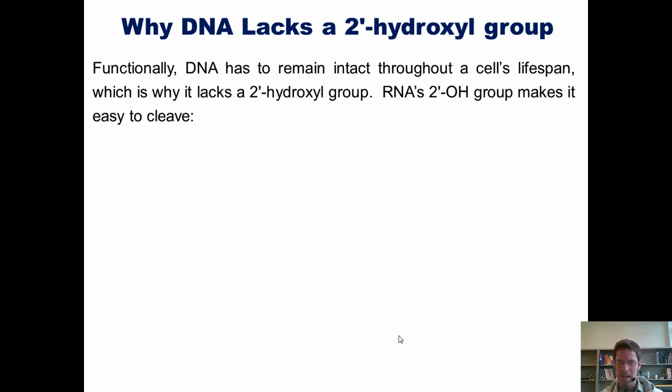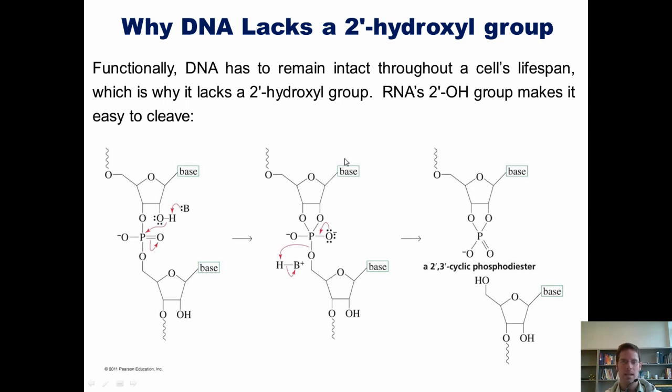Functionally, DNA has to remain intact throughout a cell's lifespan. RNA, in contrast, is formed and used and then recycled transiently in the cell when needed. Why? Because RNA's primary role is to serve as an intermediary between DNA and making proteins. That's it. So why does DNA really lack a 2' hydroxyl group? Well, as it turns out, having a 2' hydroxyl group makes a nucleic acid relatively unstable. Here's how.